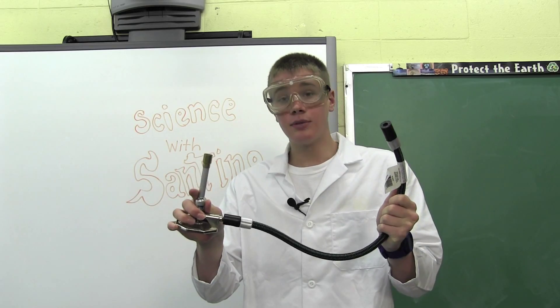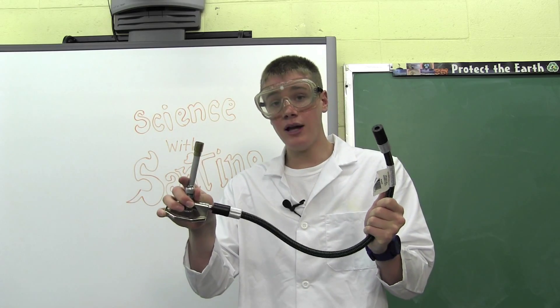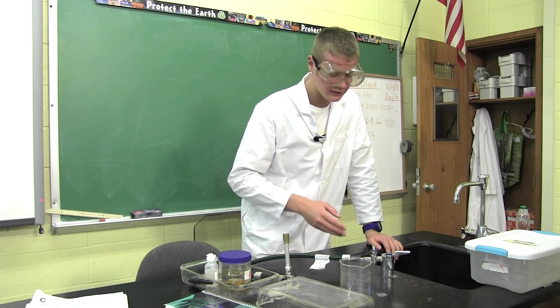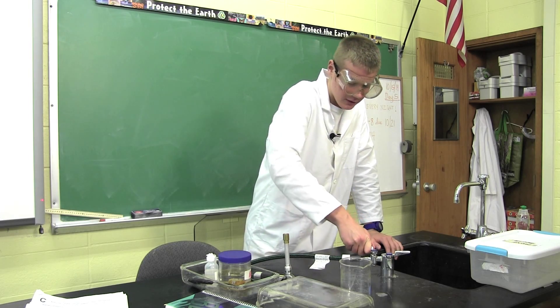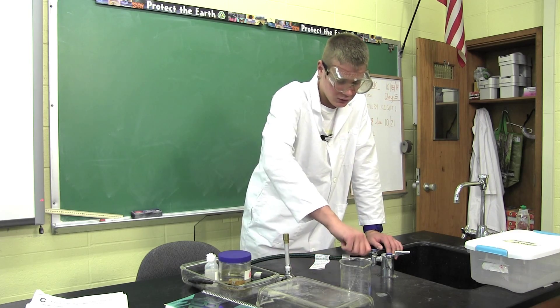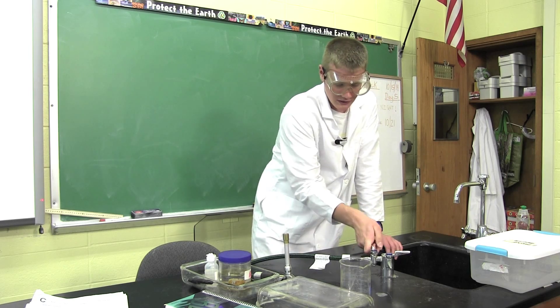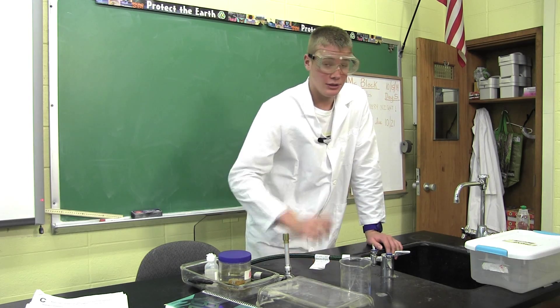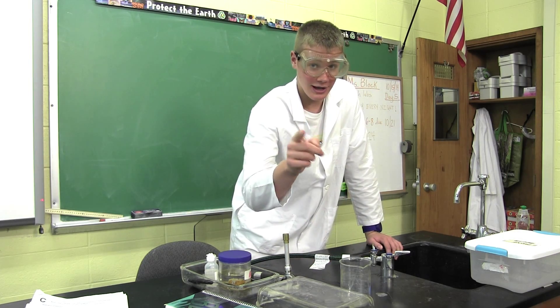Now, remember, kids, fire is dangerous, so don't try this at home. Our Bunsen burners use methane gas to make their flames. To turn on the gas, the handle must be in line with the spout, like that. And to turn off the gas, return it to its original position, and make sure the gas is always completely off when you're not using it. You do not want gas leaking in your class.